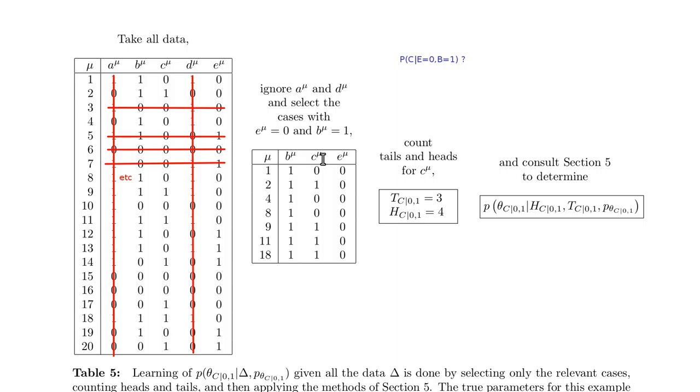By counting the zeros, which would be 3—that's the number of tails—and 4 heads, and then we simply do the standard binary learning that we had before.